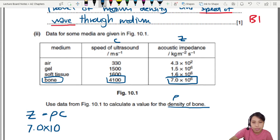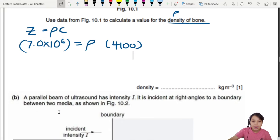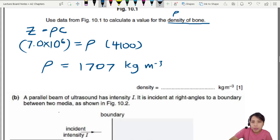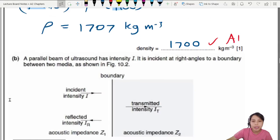Let's do some substitution to see if you manage to get it correct. So 7.0 times 10 to the 6 equals to some density of bone. I don't know what that is but I know the speed of ultrasound is 4100. And that would give me a density of bone of about 1707 kg per meter cube. Final answer, I guess I could do 2SF because here is 2SF. About 2SF. Pretty safe. 2SF. 1700. Just one mark only. Just use the equation.